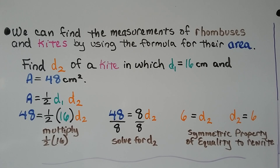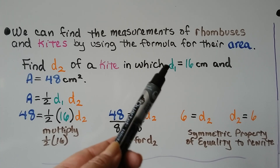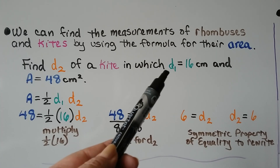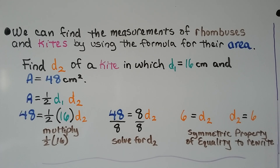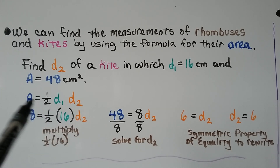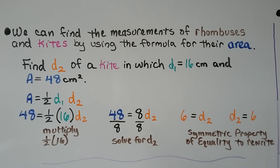This means the area of a rhombus or kite with diagonals d1 and d2 is A = ½·d1·d2. We can find measurements of rhombuses and kites using this formula. If we need to find d2 of a kite in which d1 is 16 centimeters and we know the area is 48 centimeters squared, we put it into our formula: area equals half times the first diagonal times the second diagonal.